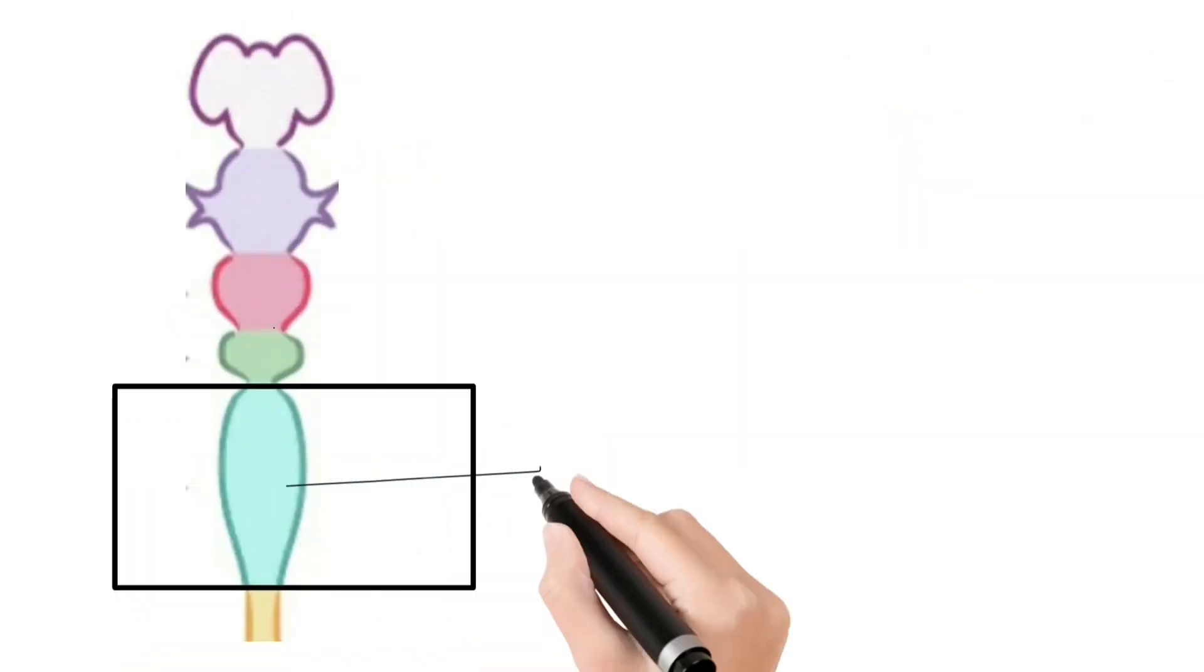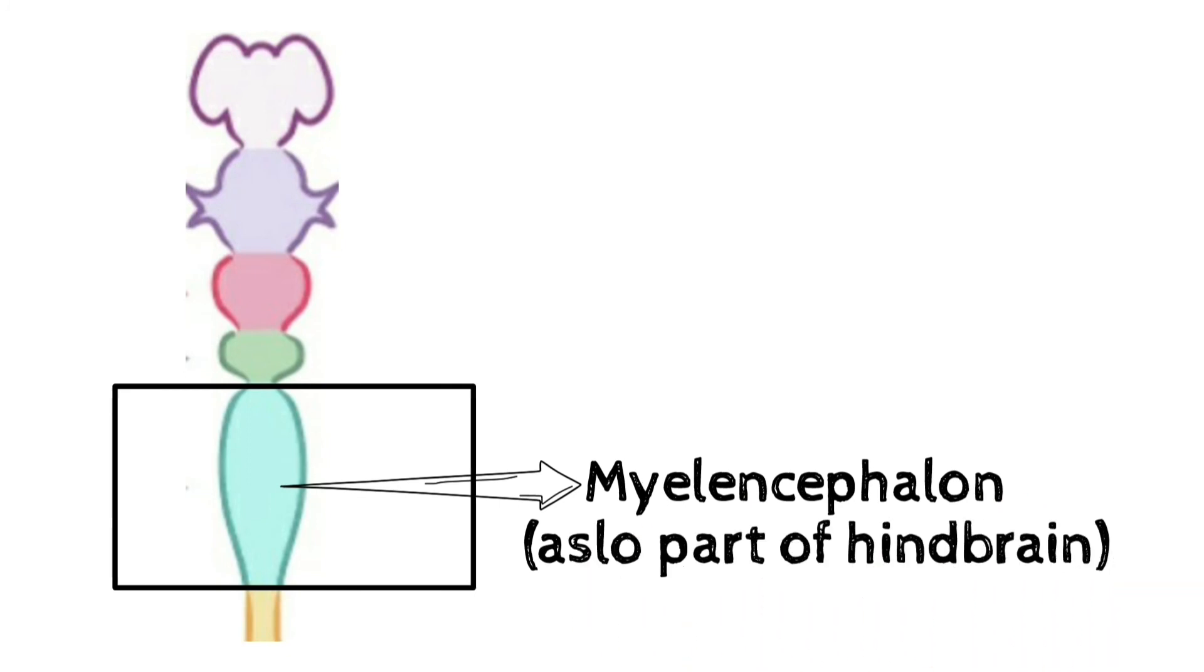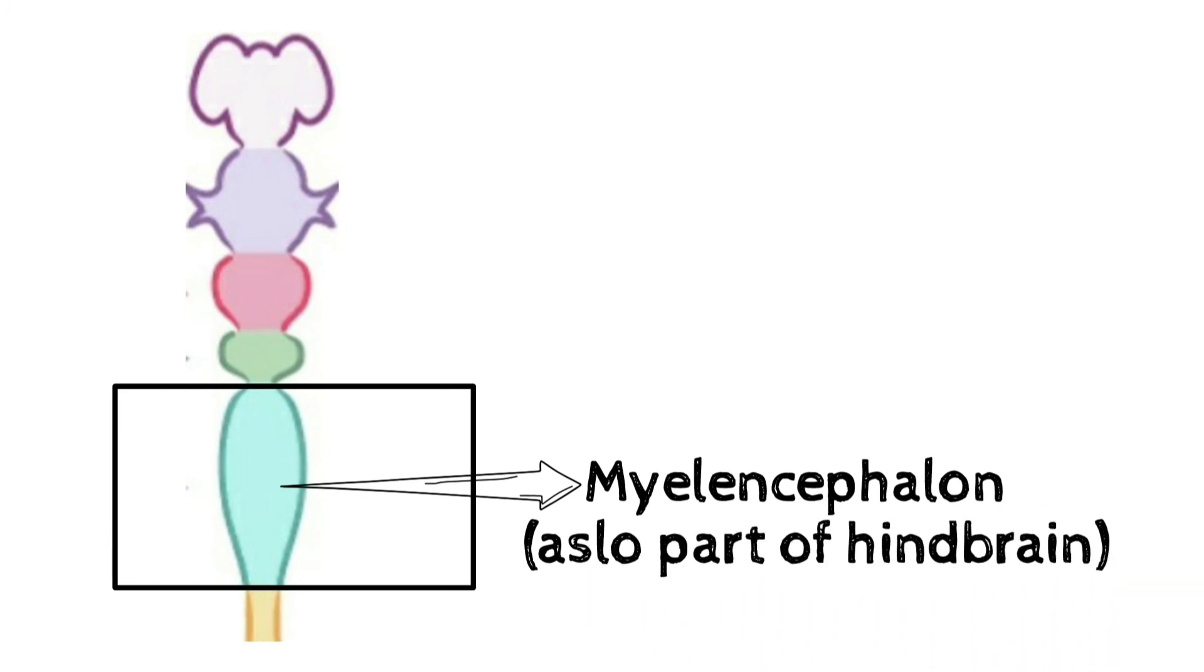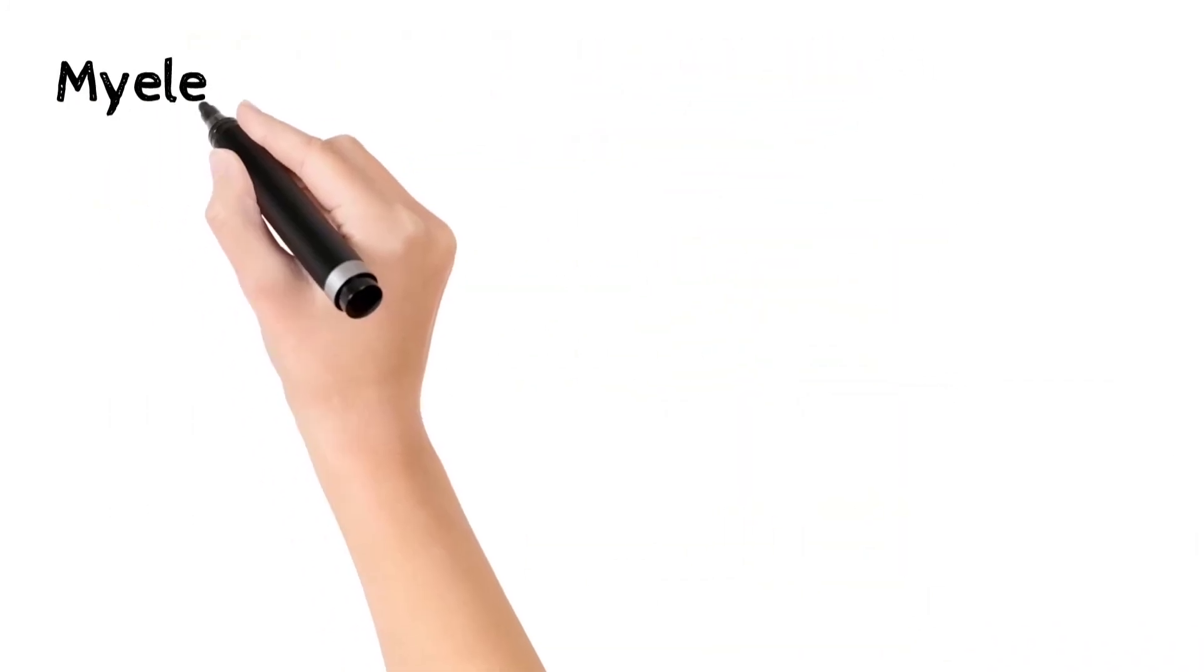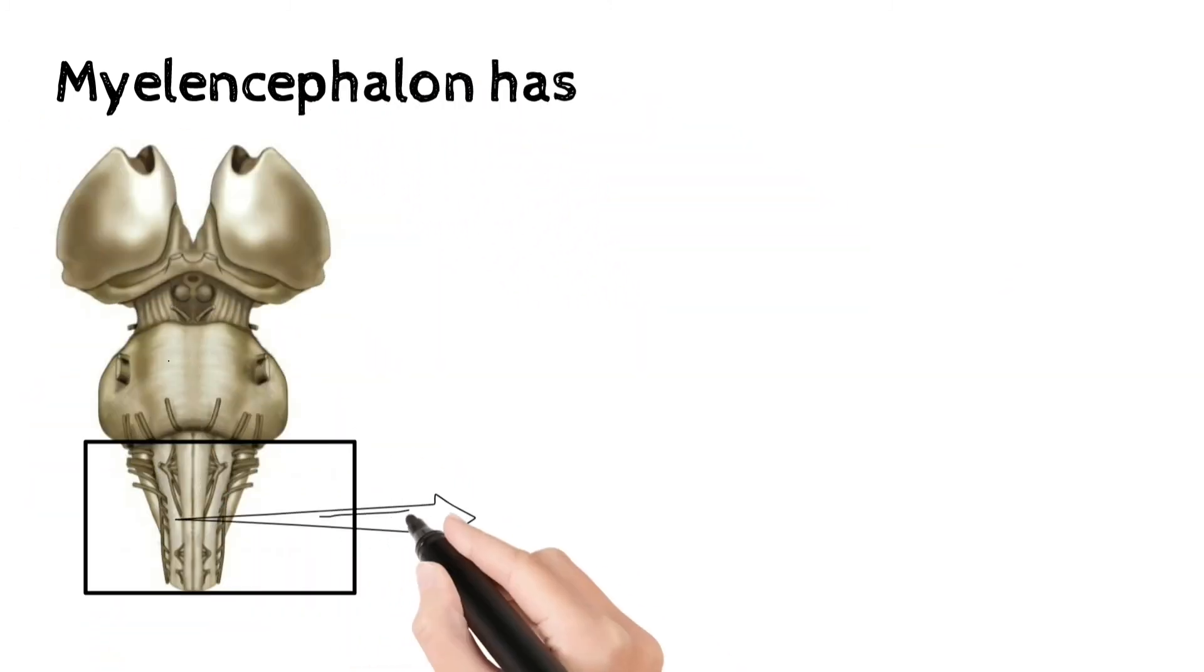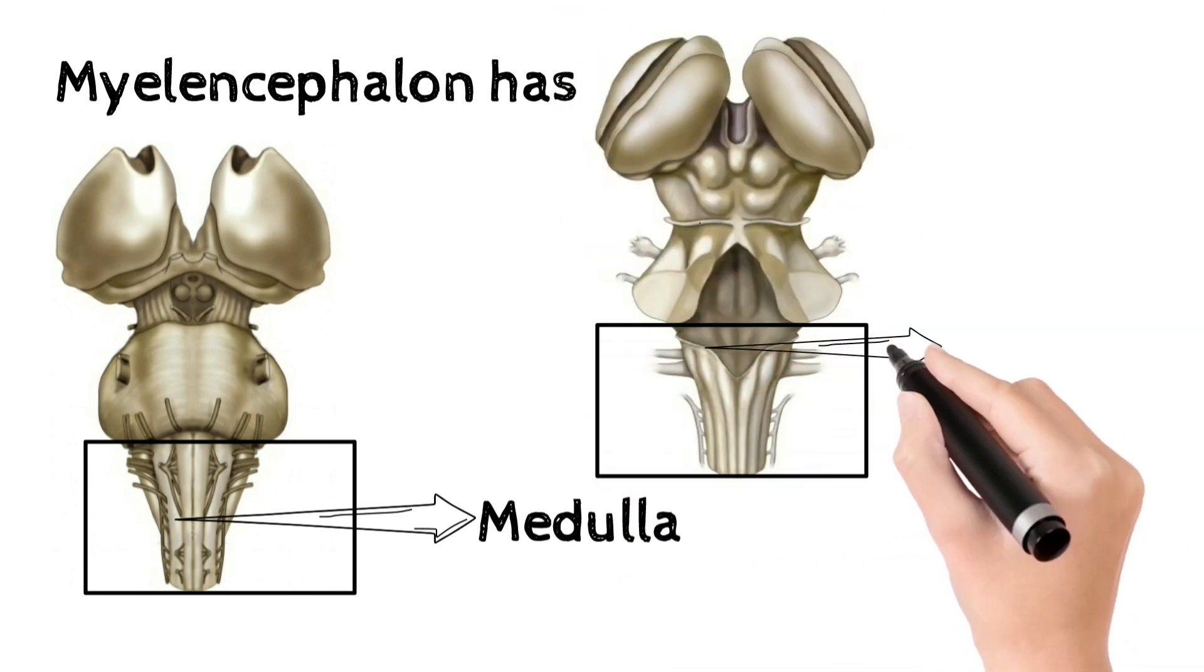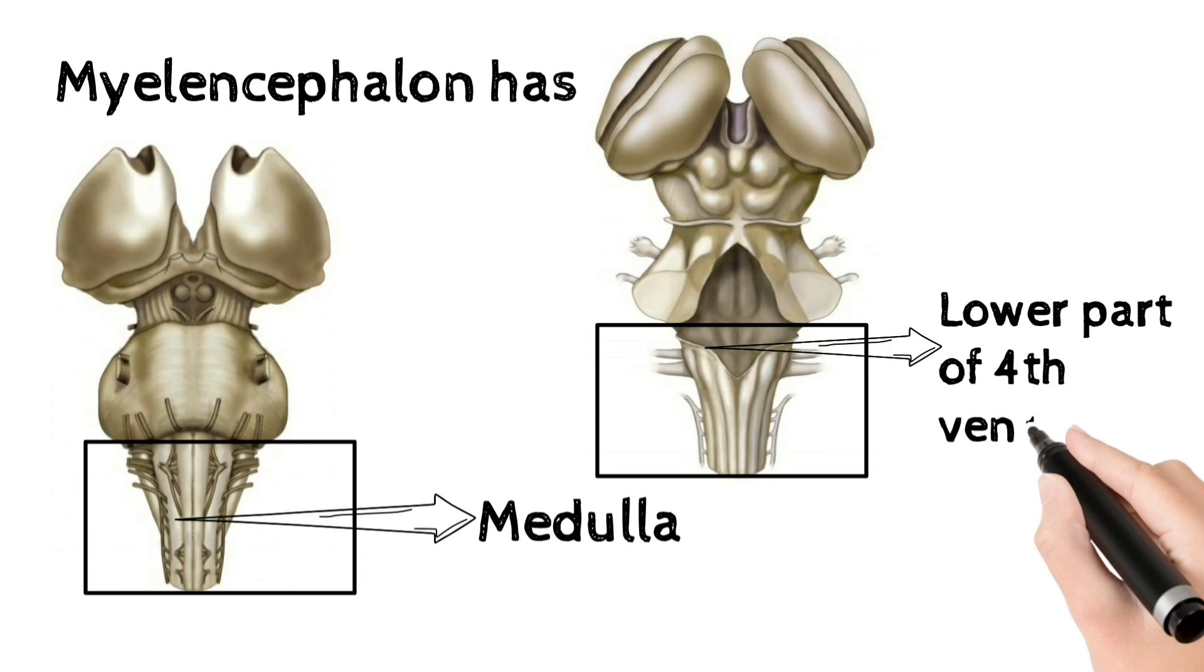The last part but not least is myelencephalon. Myelencephalon has medulla, lower part of 4th ventricle.